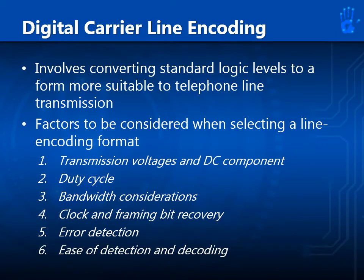Digital carrier line encoding involves converting standard logic levels to a form more suitable for telephone line transmission. Factors to be considered when selecting a line encoding format include: 1) Transmission voltages and DC component, 2) Duty cycle, 3) Bandwidth considerations, 4) Clock and framing bit recovery, 5) Error detection, and 6) Ease of detection and decoding.